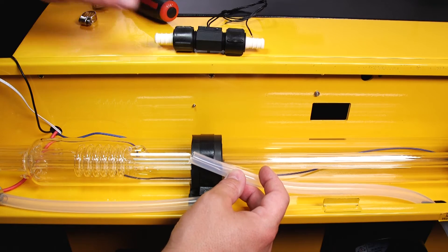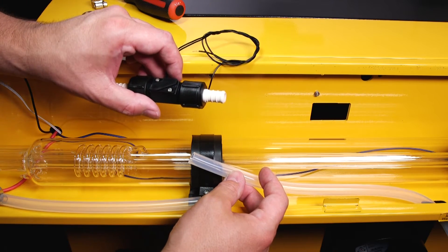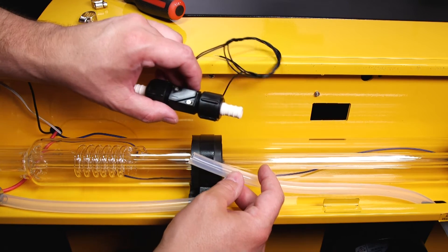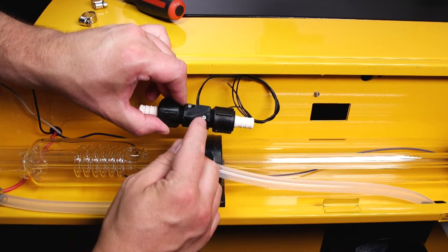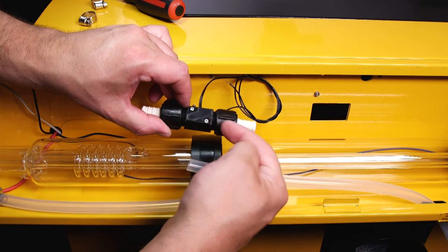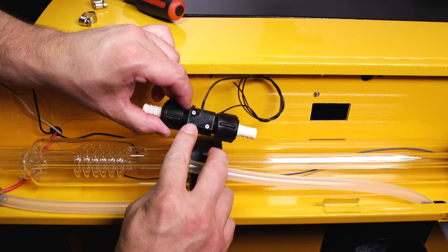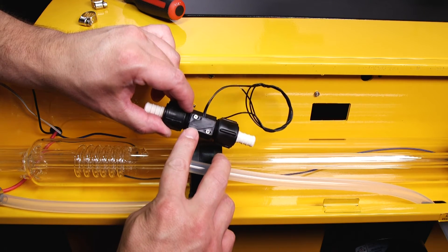When installing your water flow switch you want to make sure the water flow is going the correct way. On the switch you'll see an arrow. Mine is on the side panel of the switch. The water needs to be flowing from the water pump to your CO2 laser bulb.